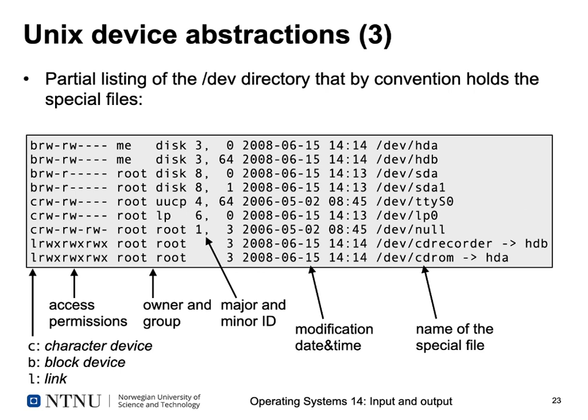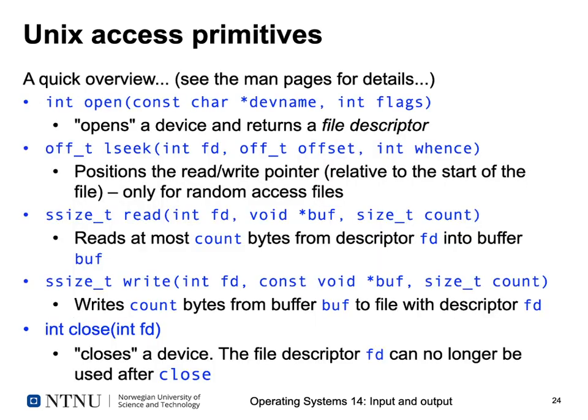These special files not only look like regular file entries but can also be accessed using read, write, open, and close as if they were regular files. For character devices, you cannot seek back to the beginning because there is no memory of past data sent over that channel. For block devices, you can position — for example, read 1000 bytes from offset 3,500,000. These are the Unix primitives to access files in general and device files in particular; details are always in the man pages.